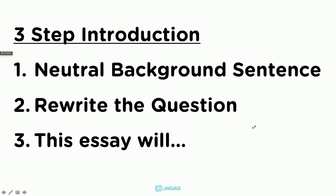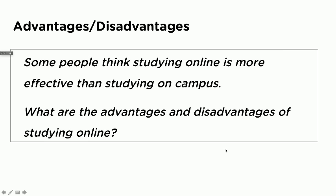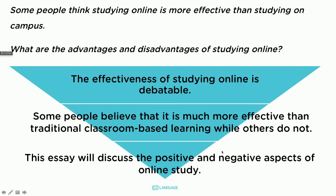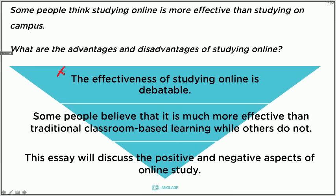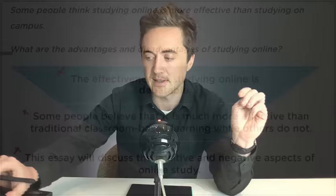Three-step introduction — neutral background sentence, rewrite the question, 'this essay will.' Let's do the advantages/disadvantages type: 'Some people think studying online is more effective than studying on campus. What are the advantages and disadvantages of studying online?' Broad background: 'The effectiveness of studying online is debatable.' Rewrite the question: 'Some people believe that it is much more effective than traditional classroom-based learning, while others do not.' Third sentence: 'This essay will discuss the positive and negative aspects of online study.' No opinion. Three-sentence introduction — it works every time.